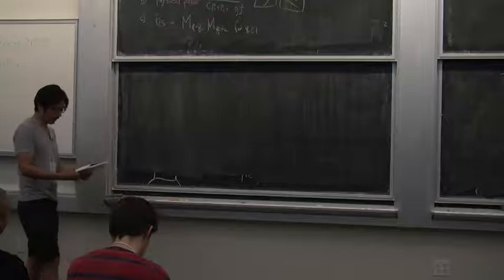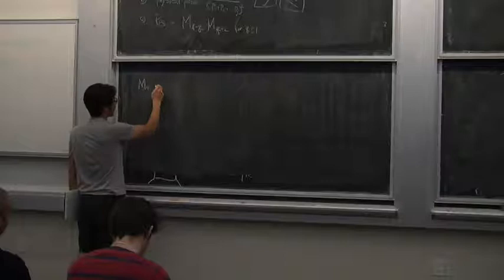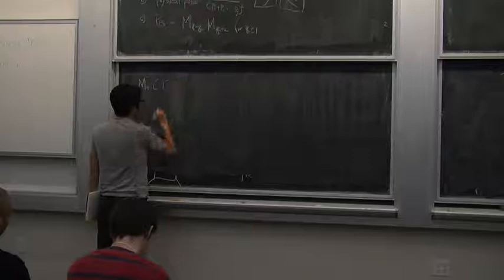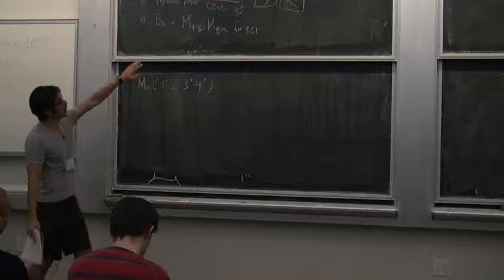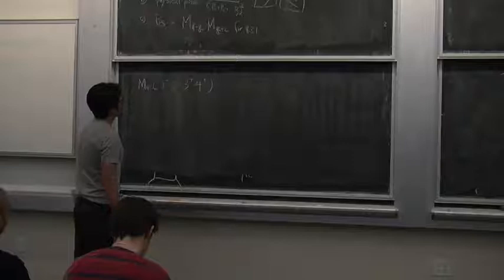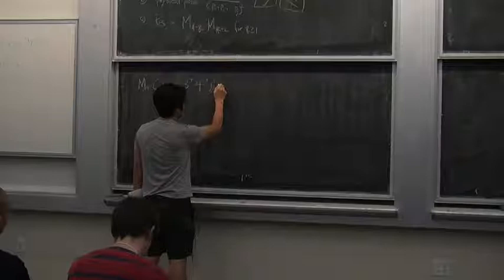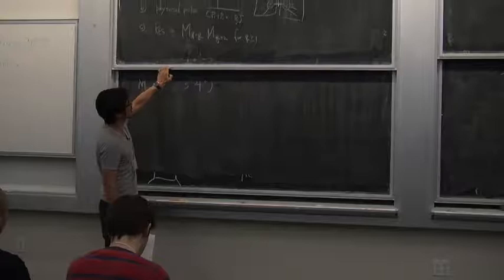Now we're going to do a test run to see what constraints we have. I'm going to try to guess the answer for the four-point interaction of a bunch of vectors: particles one and two have minus helicity, and three and four have plus helicity. I'm going to try to construct the answer using the constraints I have.